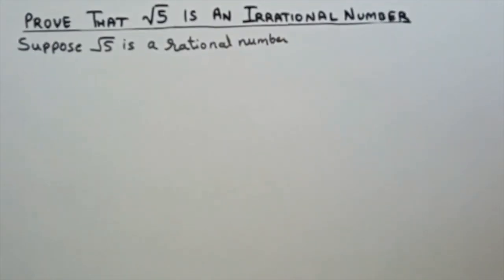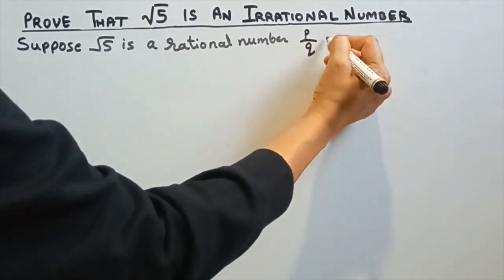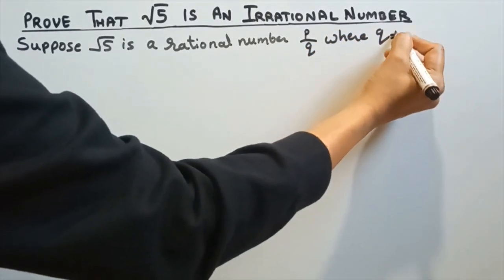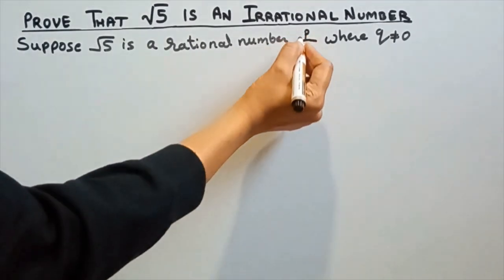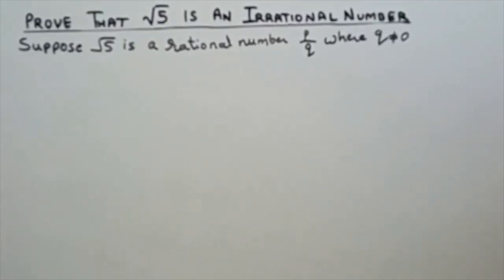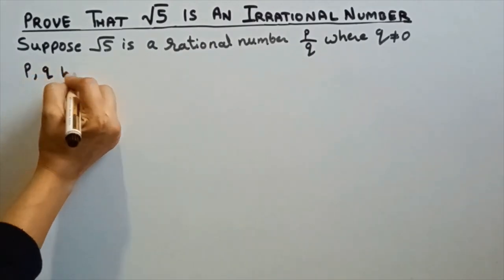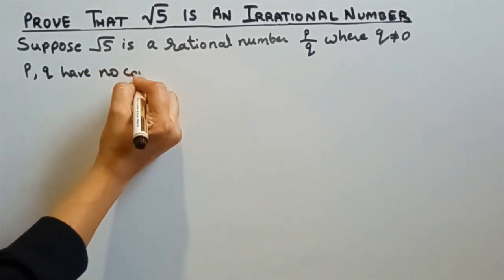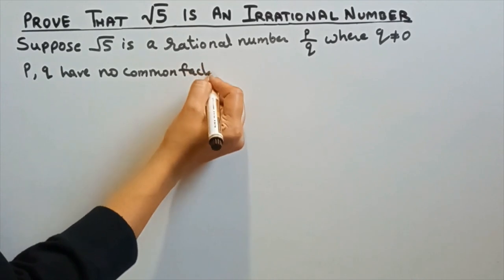As root 5 is a rational number, it must be in the form of p by q, where q is not 0. One more condition: p and q do not have a common factor — that is, p and q have no common factor.